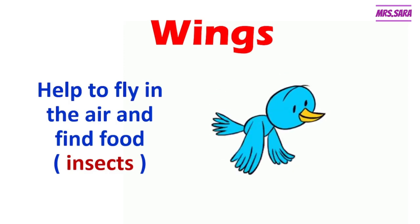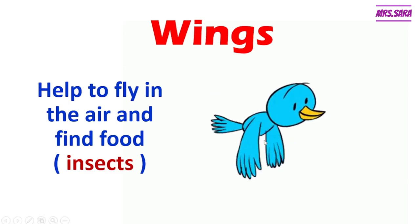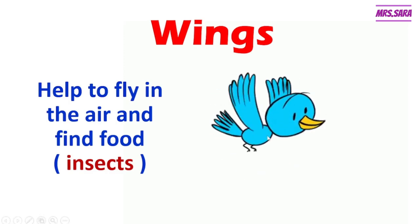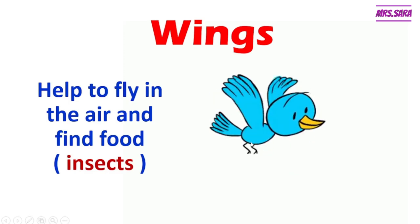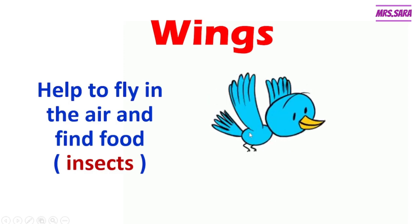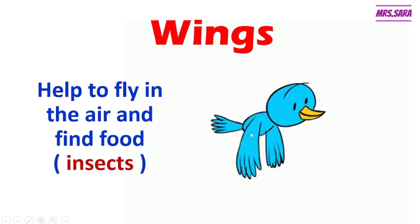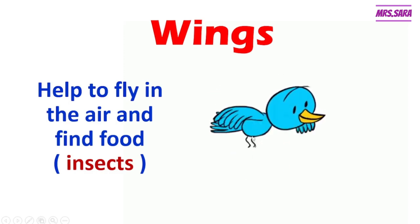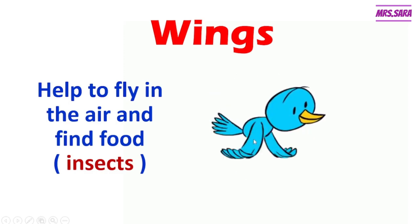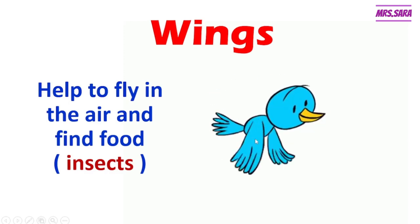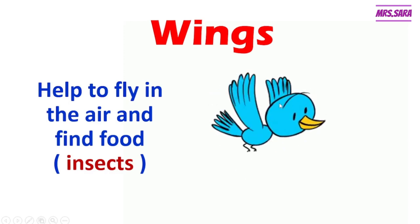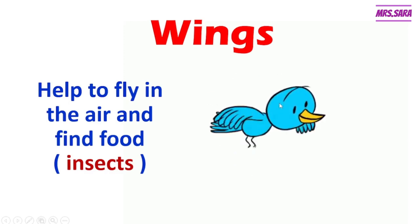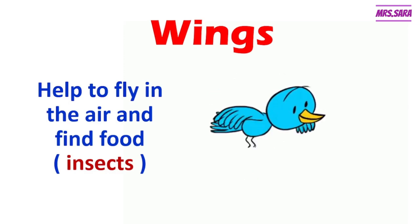What can you see here, Primary 2? This is a bird that is flying in the air, right? He uses — is it called an arm? No. In birds, we call them wings. We call them wings. Repeat after me: wings. So a bird has wings to help them to fly in the air.